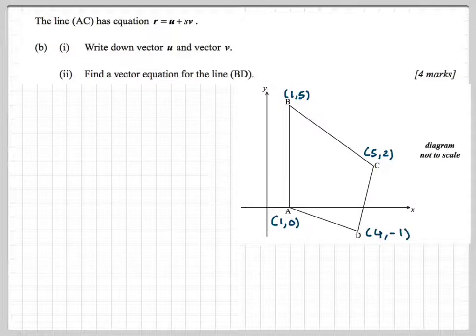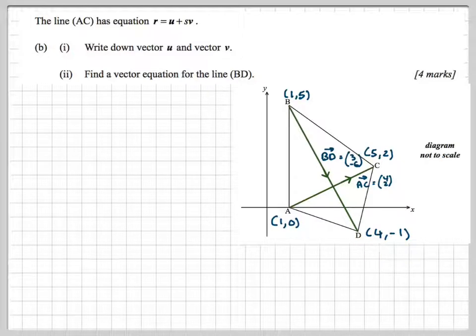Just now take the diagram. Since the line AC has an equation R = U + SV, these R, U, and V are vectors, S is a scalar quantity. This is the vector equation of the line. Write down the vector U and the vector V. What we need to do is find the vector equation of this line here, and this line here for the next part.